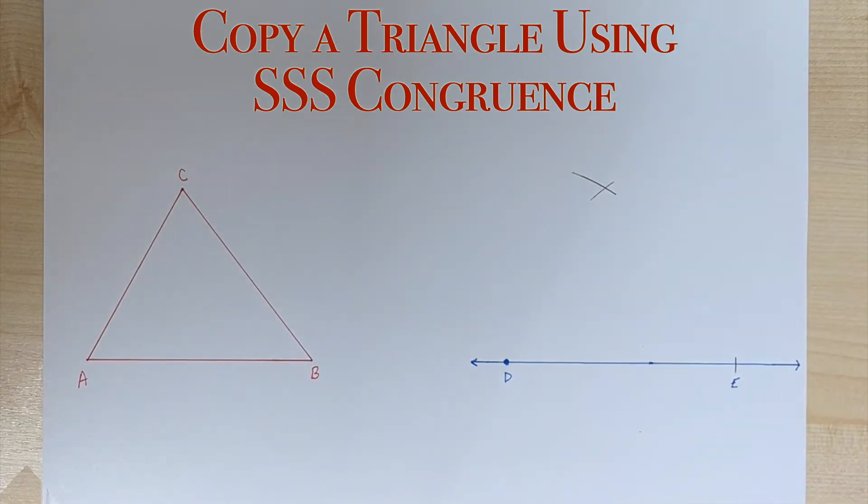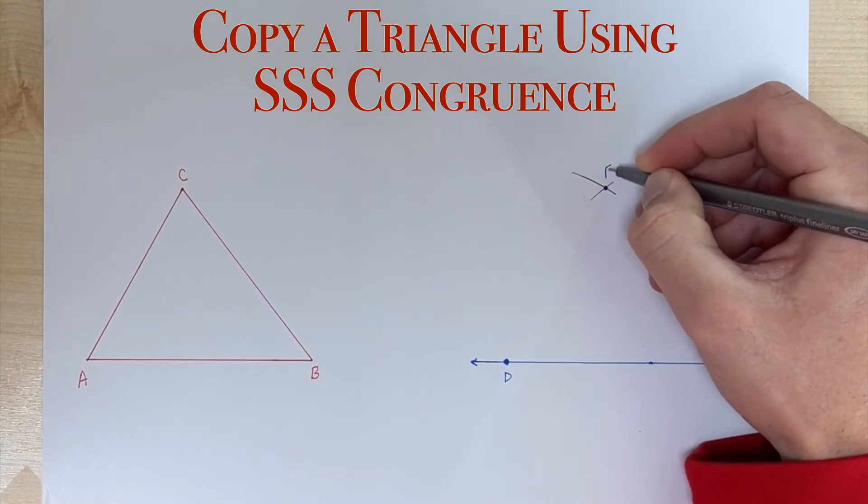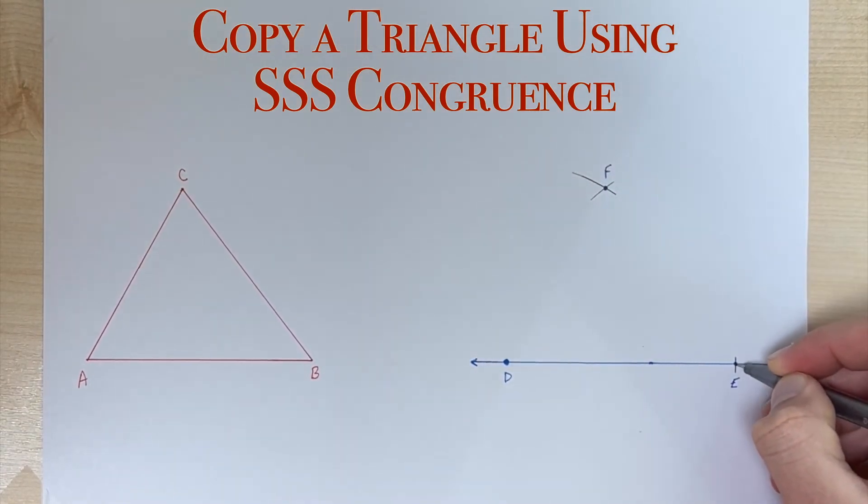Okay, so now we have an intersection here at the top. We can label this intersection with a point, call it point F. I'll put another point down here on E and now we can go ahead and connect our sides.